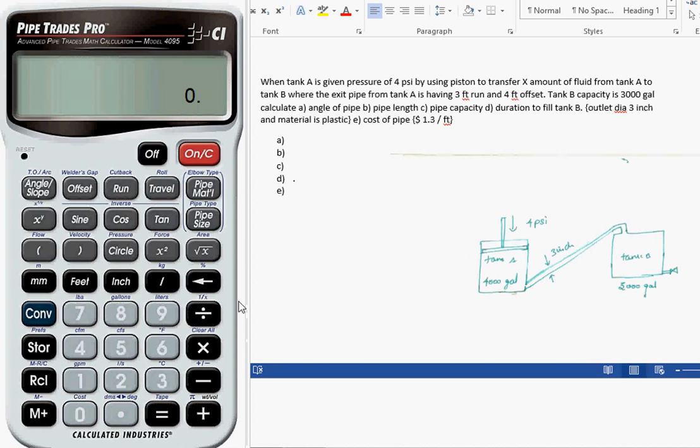First, we have to calculate the angle of pipe with the given data of 3 feet run and 4 feet offset. The angle is 53.13 degrees, so let me type over here 53.13.